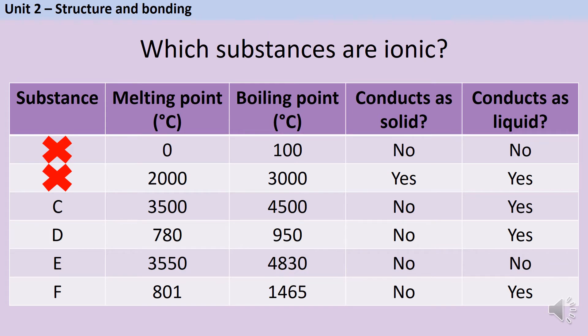Substance C also has a high melting and boiling point, and it doesn't conduct electricity when it's a solid, but it does when it's a liquid. So this one is an ionic substance. Substance D also has quite a high melting point and boiling point, doesn't conduct as a solid, and does as a liquid. So again, this is an ionic substance.